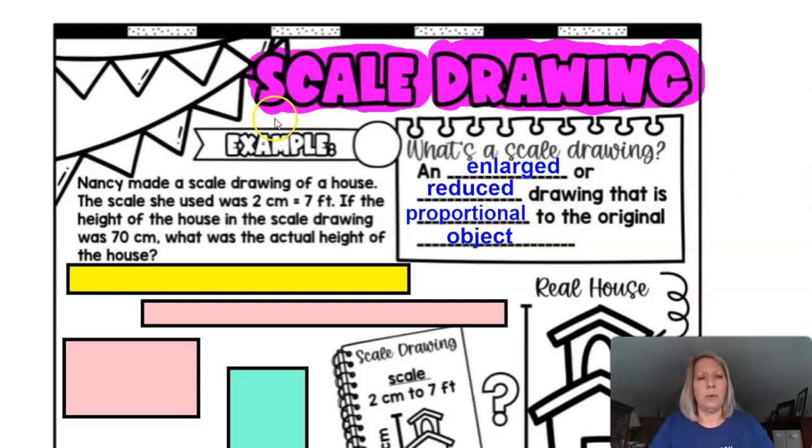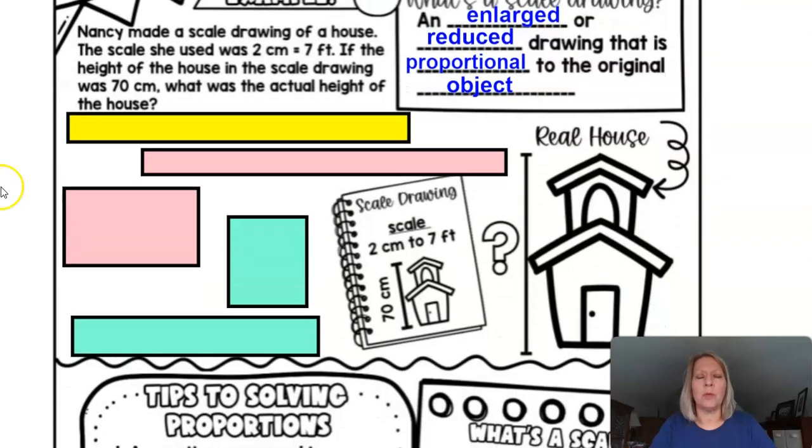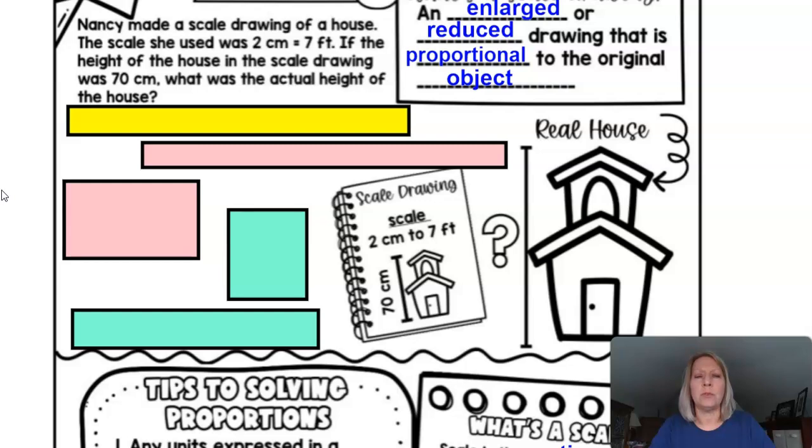So let's look at this example with Nancy here. Nancy made a scale drawing of a house, and the scale she used was 2 centimeters equals 7 feet. That means for every 2 centimeters on her drawing, it was supposed to be representing a 7 foot actual distance. So if the height of the house in the scale drawing was 70 centimeters instead of 2 centimeters, what was the actual length of the house? If you want to pause the video and see if you could figure this out before we get there together, that would be just fine.